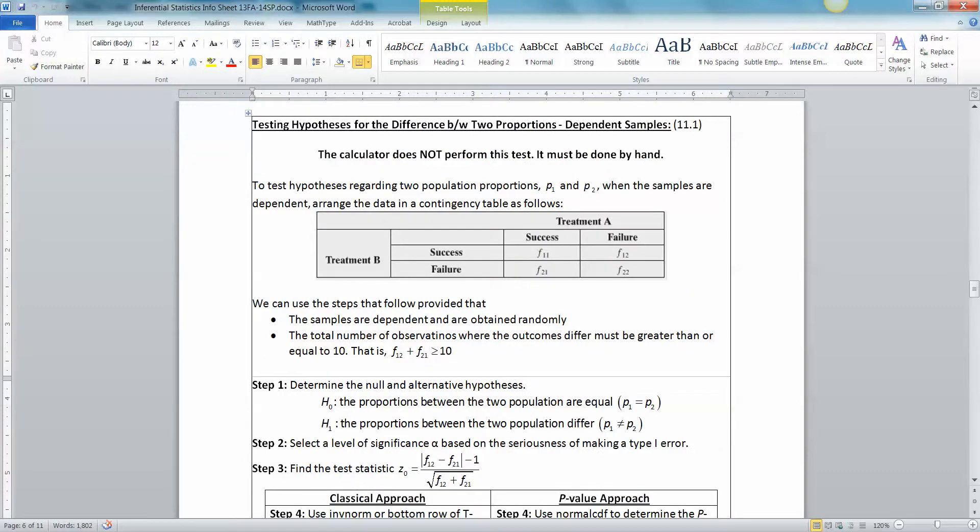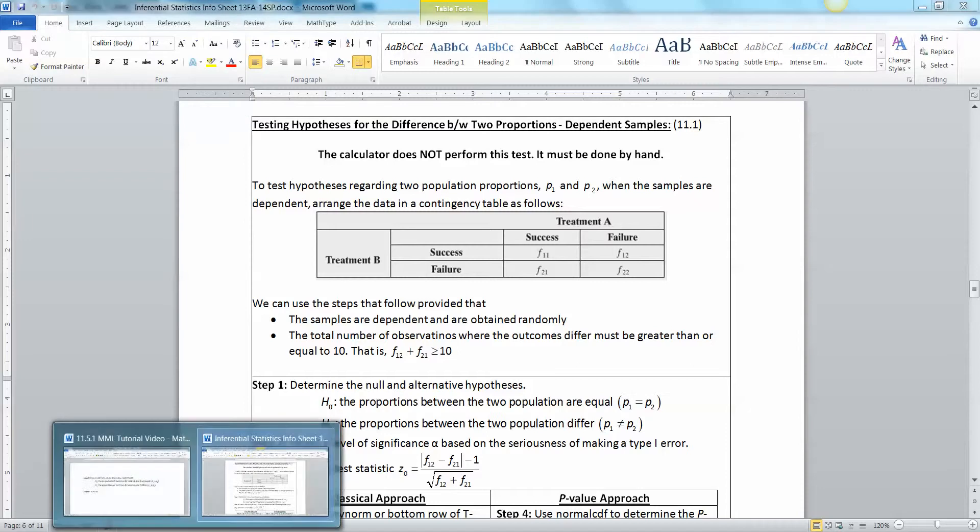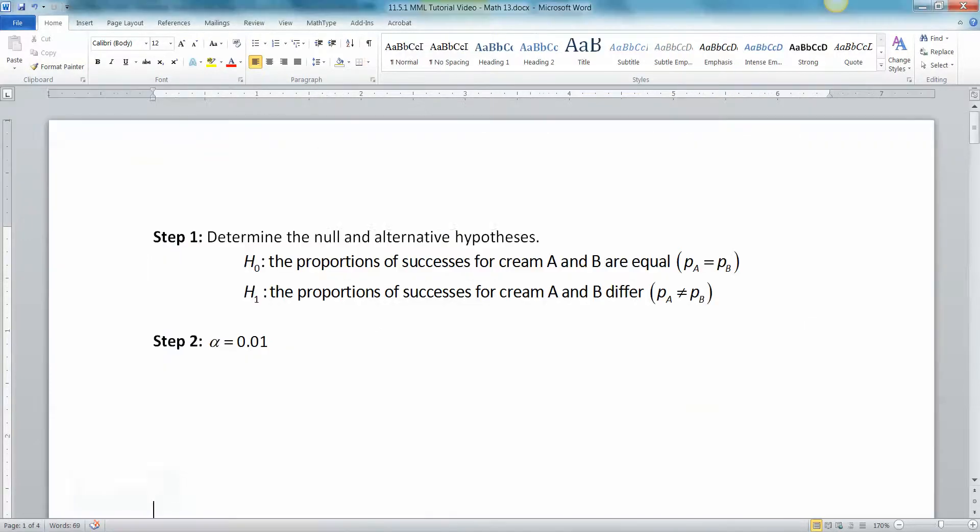Okay, so first thing you have to do is determine your null and alternative hypothesis, which would be that the proportions for the two creams are the same or that they differ. I wrote that right here. The proportion of successes for cream A and cream B are equal, in other words, pA equals pB. And the proportion of successes for cream A and B differ. They're not the same. And your alpha is 0.01, that's set up in the problem.